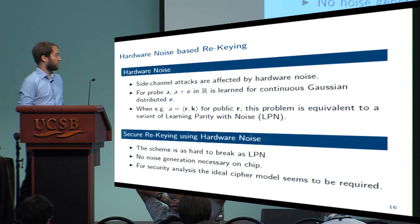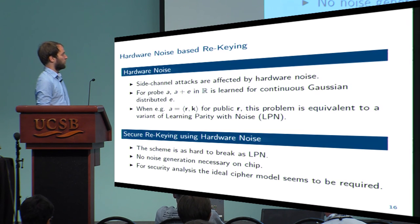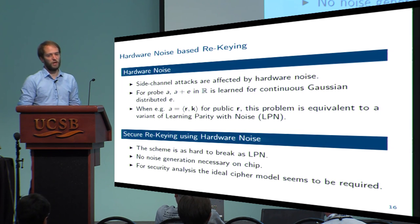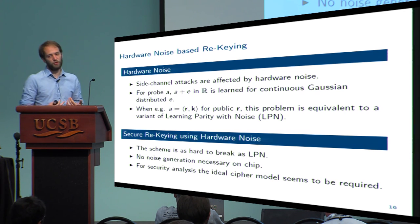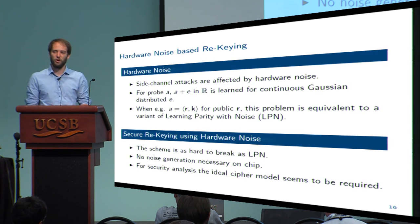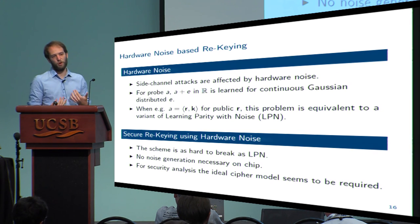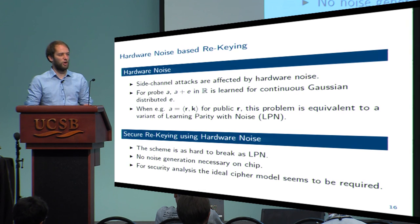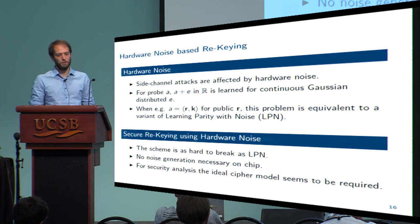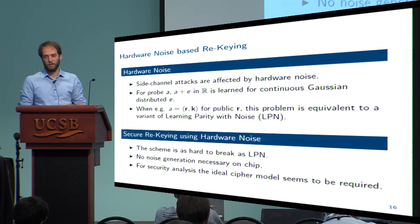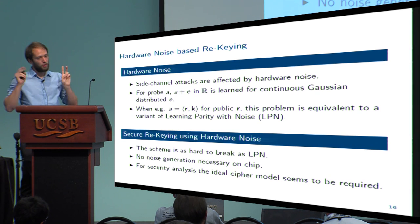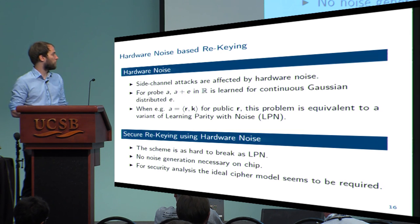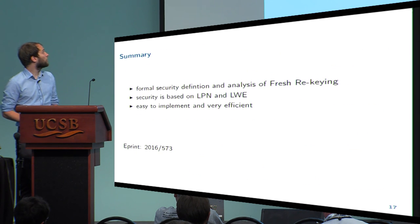For the security, there is a drawback: it seems we need the ideal cipher model or at least a random oracle model, because on the chip itself we don't have this noise. So the session keys won't be indistinguishable from uniform unless the adversary takes the side channel attack. As input for the protocol, we first need to hash it, for example with a random oracle.